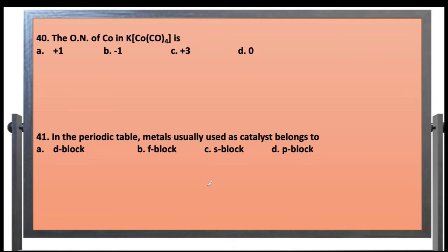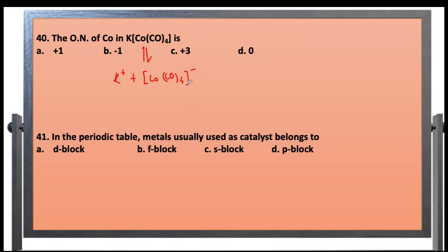The oxidation state or oxidation number of cobalt in potassium tetracarbonyl cobaltate. This is a complex molecule. Potassium carries a +1 charge. The carbonyl (CO) ligand is neutral. Working through the equation, the result is minus 4 for the complex ion, so the oxidation number of cobalt is minus 1. This is an exception case for cobalt.